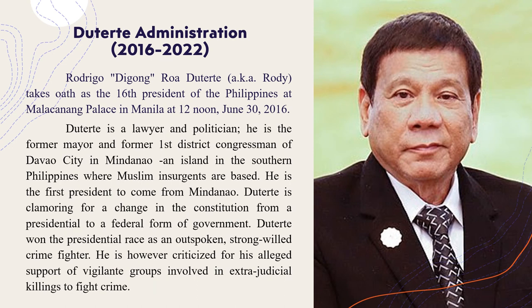Duterte Administration, 2016 to 2022. Rodrigo Roa Duterte, also known as Rudy, took office as the 16th President of the Philippines at Malacañang Palace in Manila at 12 noon on June 30, 2016. Duterte is a lawyer and politician, and the former mayor and former first district congressman of Davao City in Mindanao, an island in the southern Philippines where Muslim insurgents are based. He is the first president to come from Mindanao. Duterte is clamoring for a change in the constitution from a presidential to a federal form of government. Duterte won the presidential race as an outspoken, strong-willed crime fighter. He is, however, criticized for his alleged support of vigilante groups involved in extrajudicial killings to fight crimes. He is also known for his strong comments about the U.S. as well as the church. He is the proponent of the Build-Build-Build project.